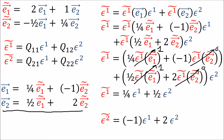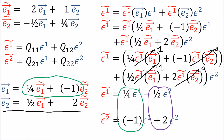Working through the same process for epsilon-2-tilde, you'll notice that these coefficients are awfully similar. This means that to go from the old dual basis to the new dual basis, we use the backward transformation.